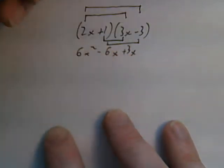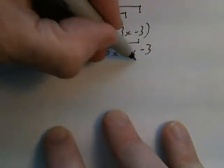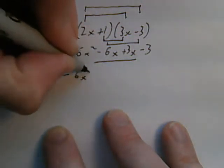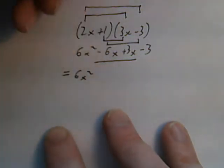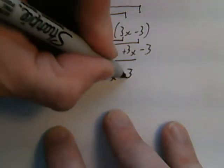Last, 1 times negative 3 is minus 3. Collect my like terms. Minus 6 plus 3 is negative 3x minus 3.